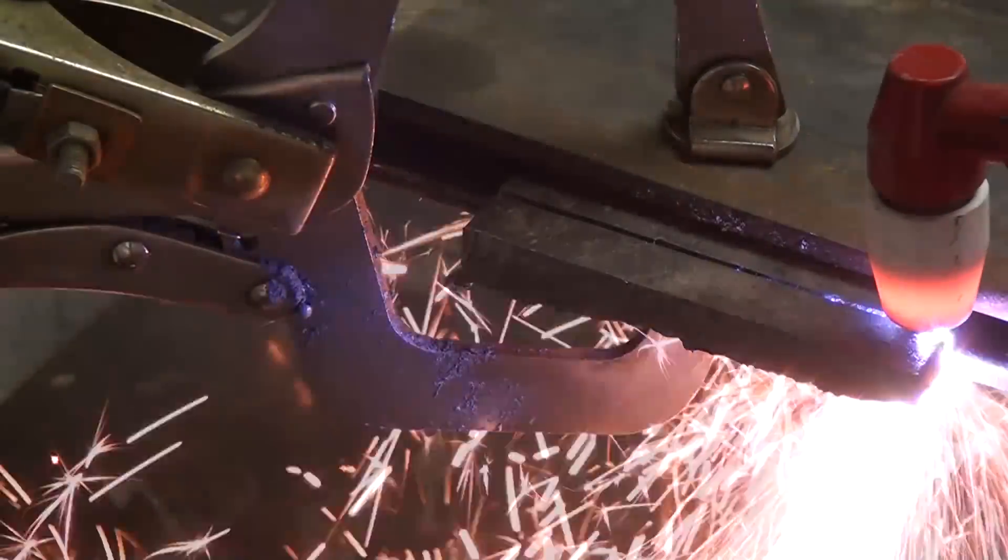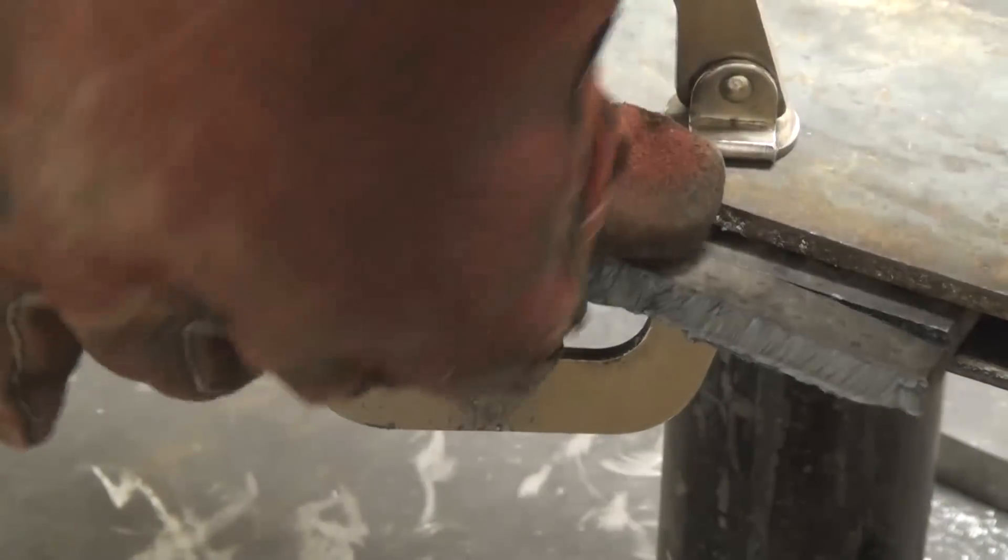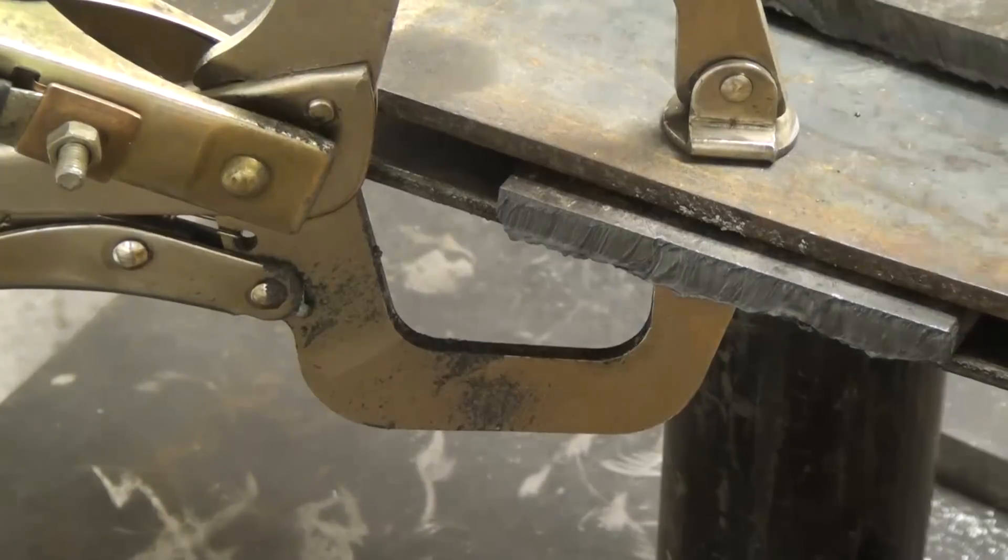I noticed that on Miller's website, the Miller Plasma Cutters, they suggest 90 PSI, but the manual for the Colossal Tech suggests, I think it's 58, but I set it right at 60.